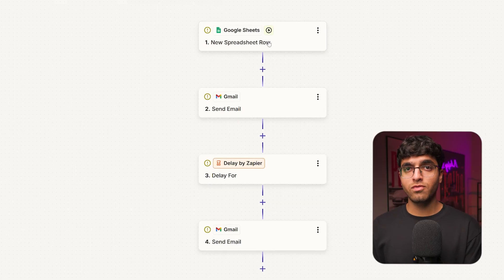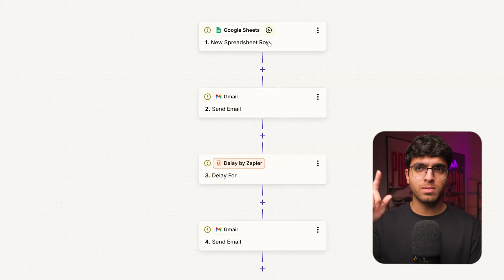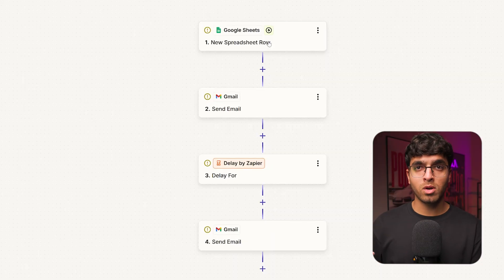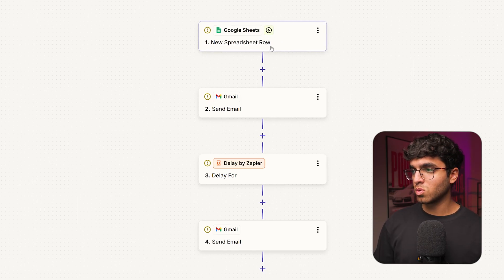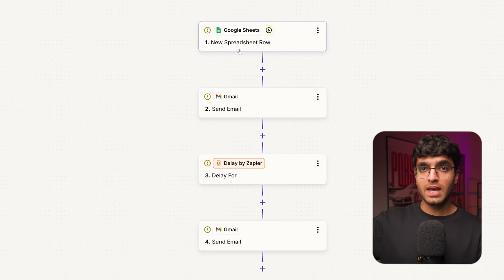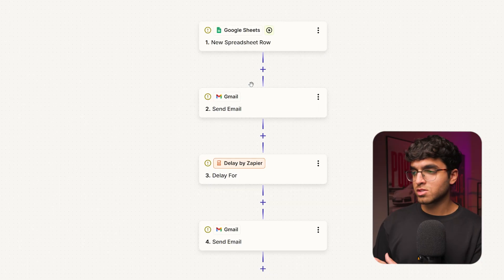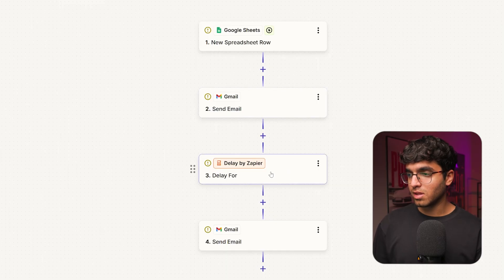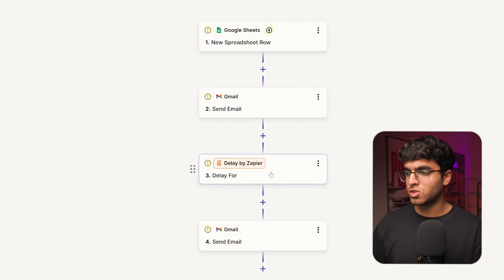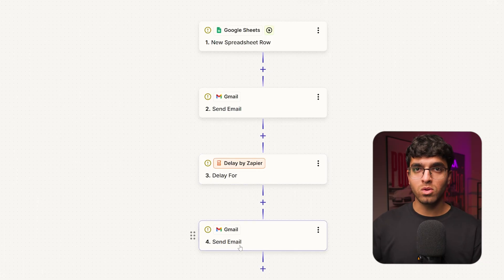Inside Zapier, we have a Google Sheets node which looks for new spreadsheet rows. As soon as you add your client's name and email, it sends them an email using the Gmail node. Then it adds a delay of a couple of days — you can set this to two or three days, however much you want — and then it sends them a follow-up email as well.